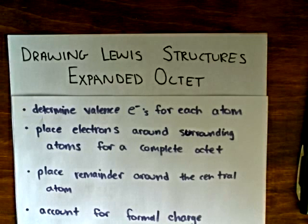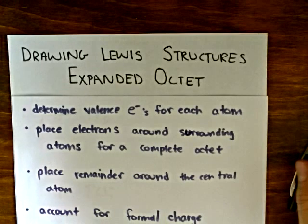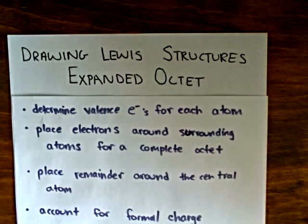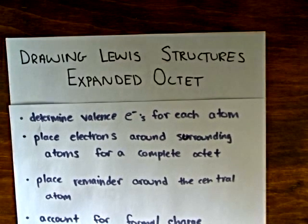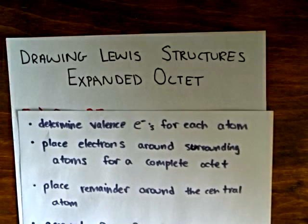In this video, I want to go over how we draw Lewis structures for species that have an expanded octet. These are some of the guidelines I use when drawing species that exhibit an expanded octet. Remember, it's species with atoms in the third period or higher that will gain an expanded octet. These guidelines are almost entirely fail-proof when drawing Lewis structures with an expanded octet.